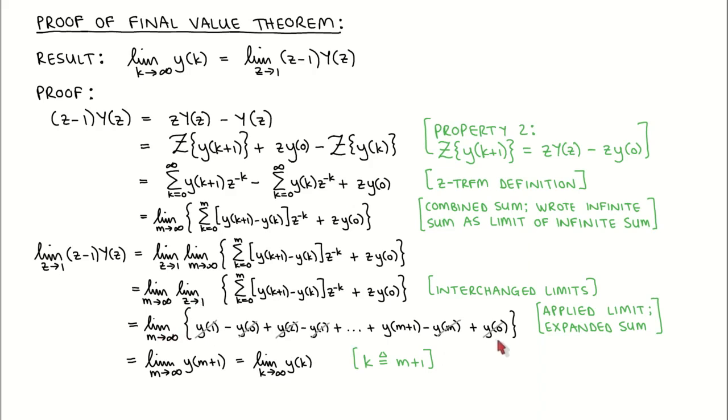We now notice that all the terms except Y at M plus 1 cancel, which results in this expression. Lastly, we change the definition of the limiting variable to K equal to M plus 1, which gives us the limit as K tends to infinity of Y of K. We recognize this as the steady state value of the signal Y, which is also the left-hand side of the theorem, and we have therefore proven the final value theorem.